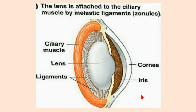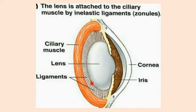This is the structure of the lens — how the lens is placed behind the iris in the eye. The lens is a biconvex structure present behind the iris. It is attached in the eye by means of ciliary muscles and suspensory ligaments. These ligaments are inelastic, and the lens is attached to the ciliary muscles by means of these ligaments.